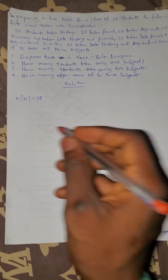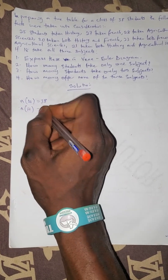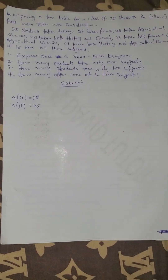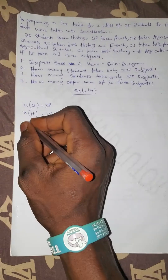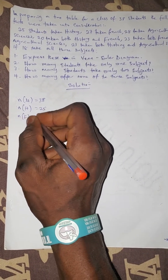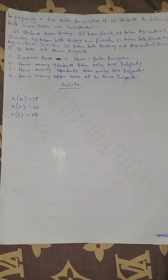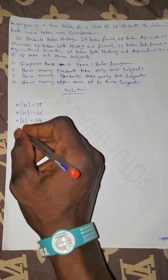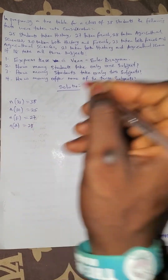25 students take History, so the number of those that take History is 25. 27 take French, so the number of those that take French is 27. 28 take Greek, so the number of those that take Greek is 28.